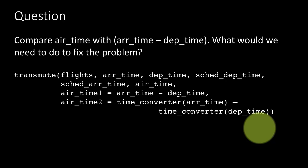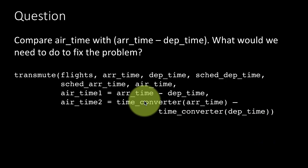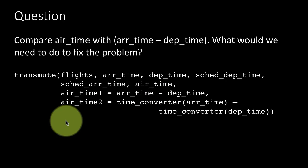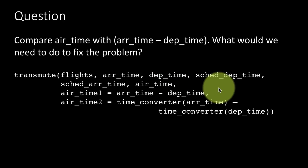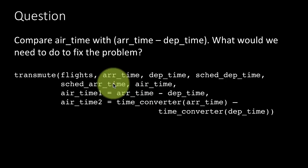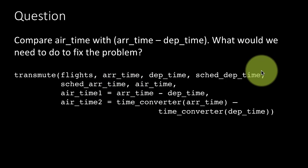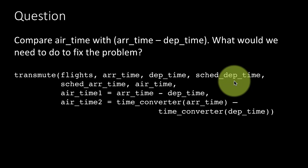So because of the fact that arrival time and departure time are recorded based on the local times at the corresponding airports, and they may not be in the same time zone, and therefore obviously arrival time 2 is not going to match air time. How will we fix the problem? Well, maybe we can fix the problem by recording all of these times in GMT or something.